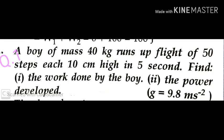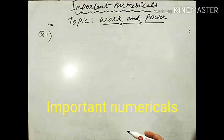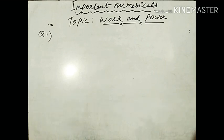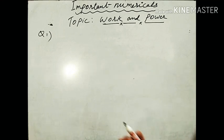The first question: a boy of mass 40 kilogram runs up a flight of 50 steps, each 10 centimeter high, in five seconds. Find the work done by the boy, and second, the power developed by him. The first step is to read the question, understand it, and write the given quantities. The boy is going up, so he has to overcome the force of gravity.